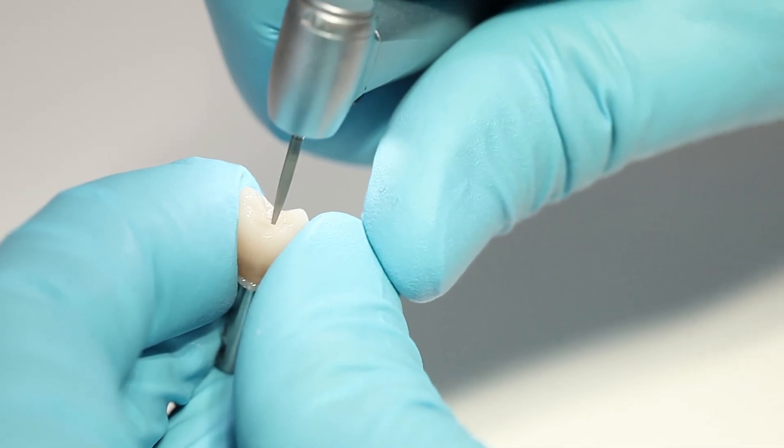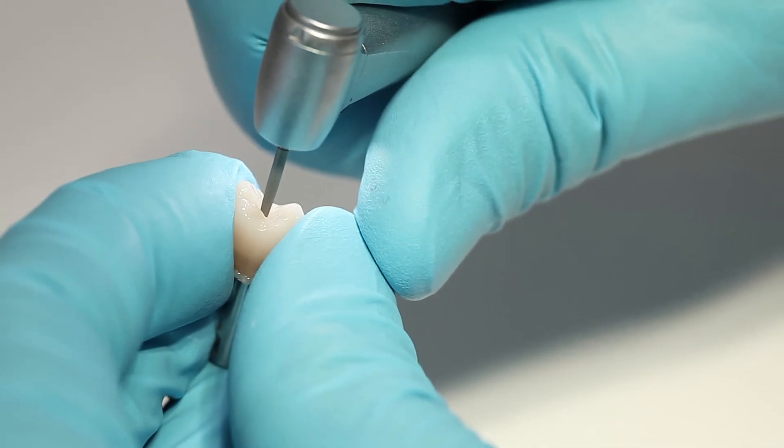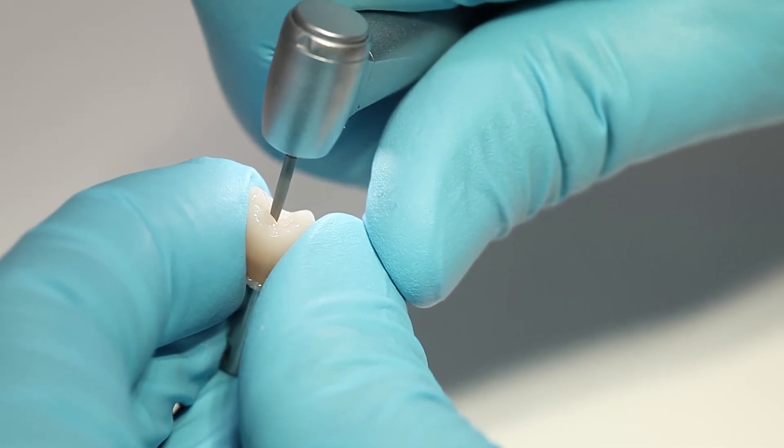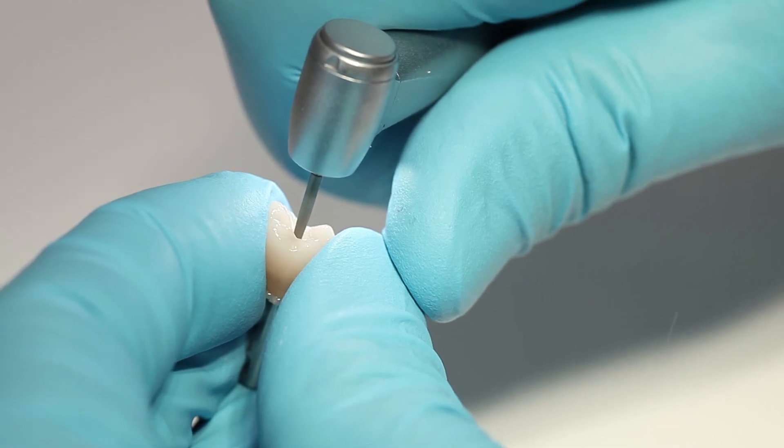If cement residue is left in the screw channel, remove it with suitable rotating instruments. Be careful not to damage the tie base.